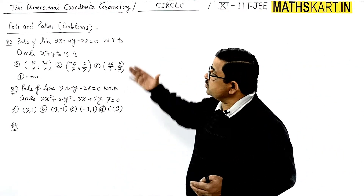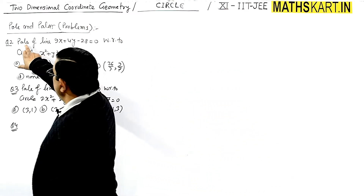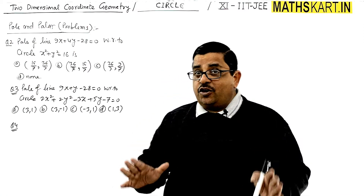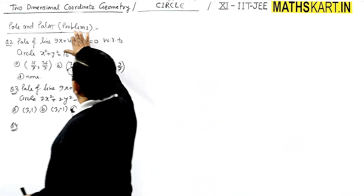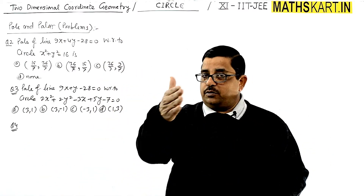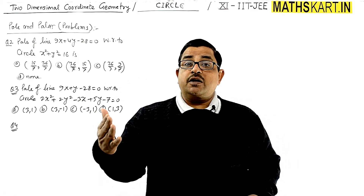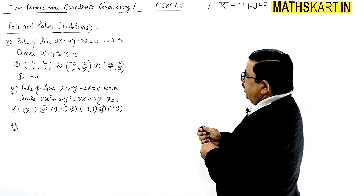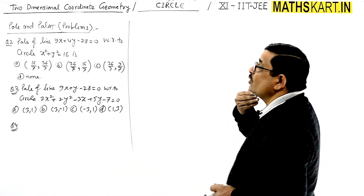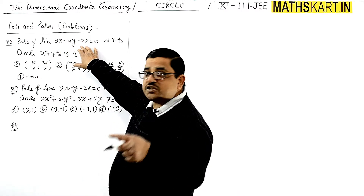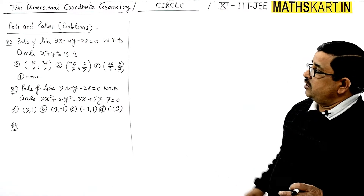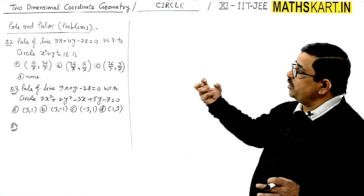There are problems based on pole. In these two questions, you have to take a polar and then find out the pole. See question number 2 — you can write the pole of the line. Pole of the line means this is the polar, and with respect to the circle given, we have to simply find out the pole.